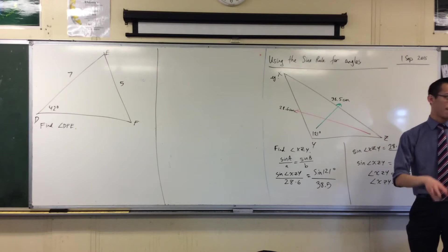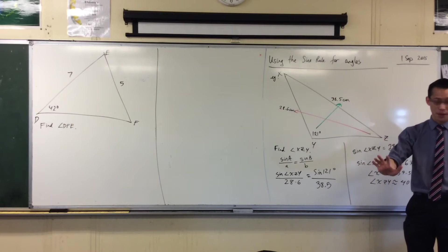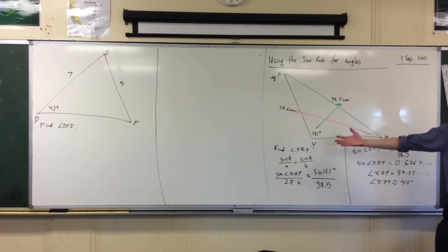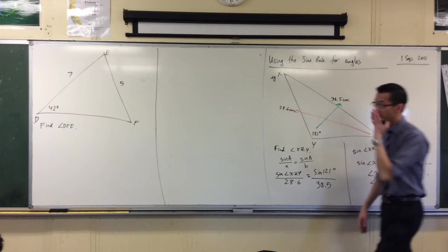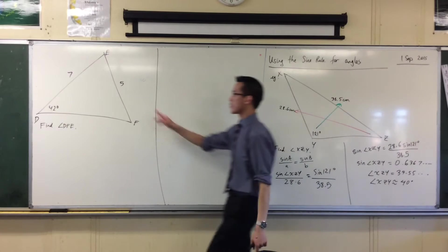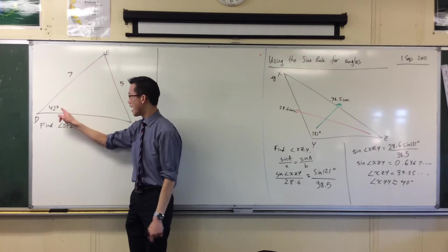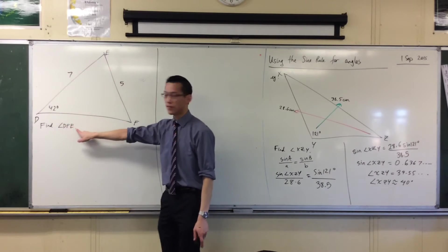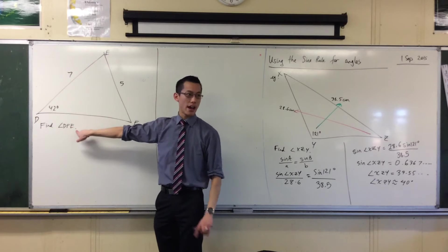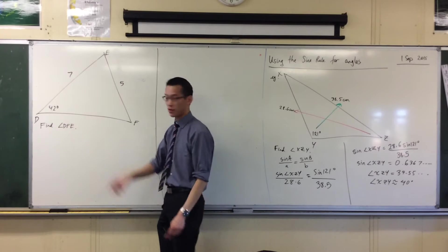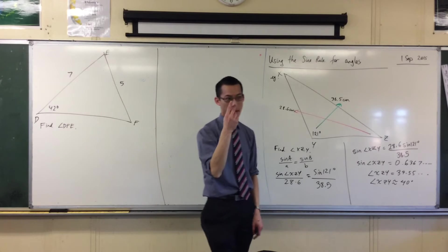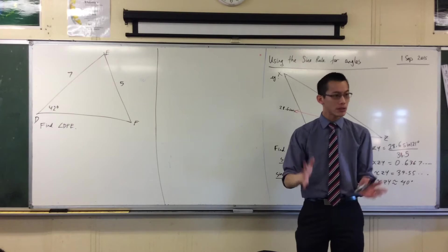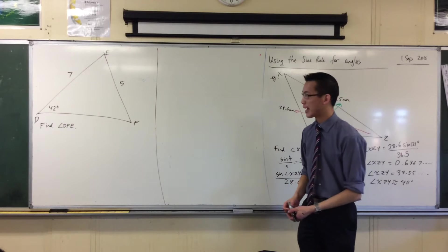This looks, for all intents and purposes, at the beginning, just like this, doesn't it? You can see I've got two sides, and I have an angle, right? And I want to find an angle, so I'm going to have a pair of a side and angle, and another pair of a side and angle. I can use the sine rule.